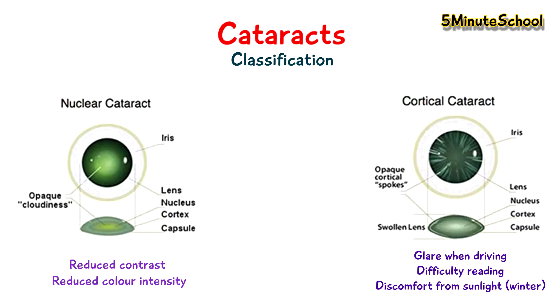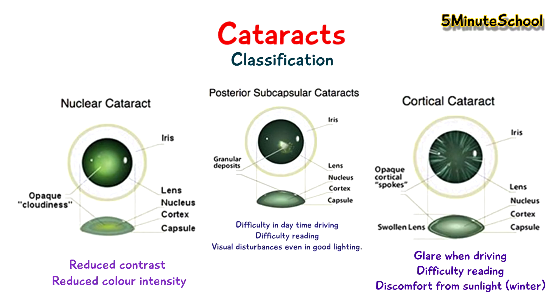With cortical cataracts, there is often discomfort from sunlight during the winter time, and that's because the sun is lower on the horizon. Subcapsular cataracts are the third type and they cause difficulty in daytime driving and difficulty reading, with visual disturbances even in good lighting.